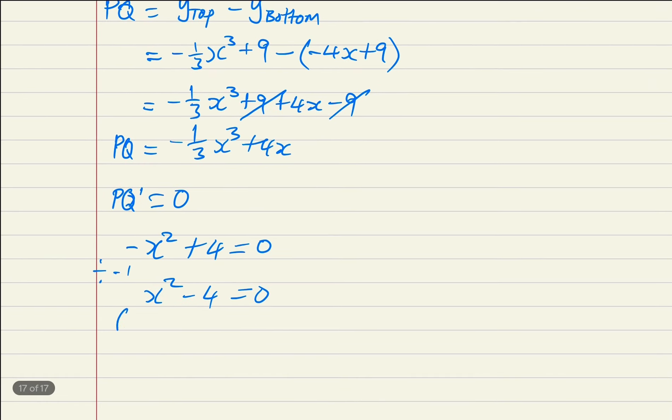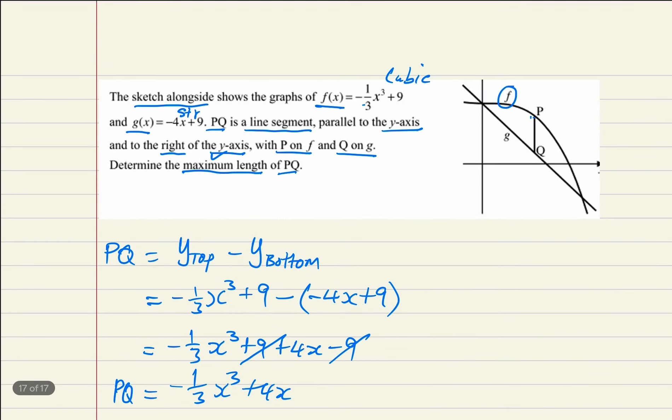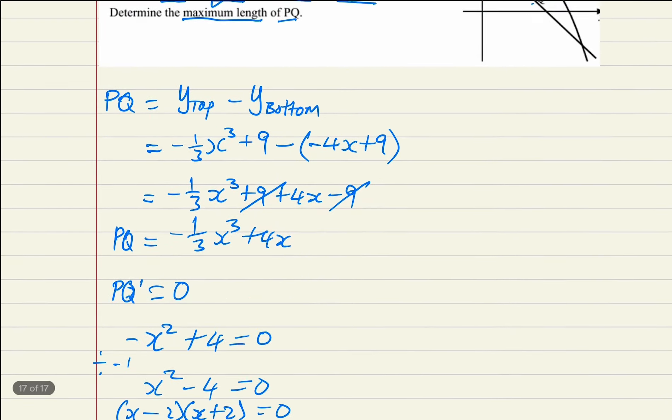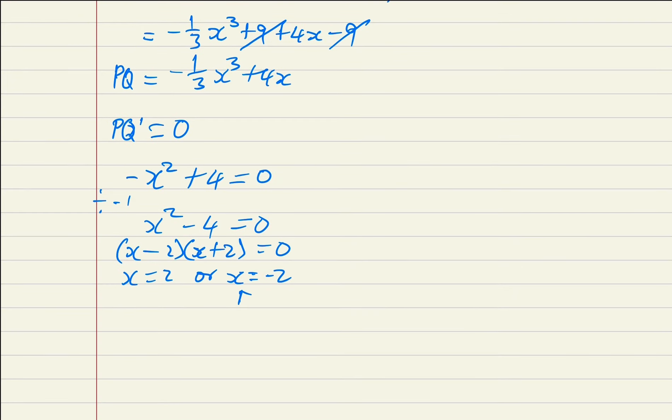This is a difference of two squares. Hence, I'll open two sets of brackets: (x - 2)(x + 2) = 0. So x = 2 or x = -2. But we know that x is positive, hence this one is not applicable. Therefore, x = 2.